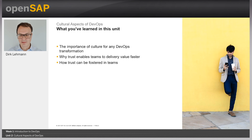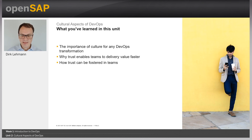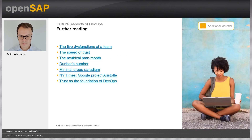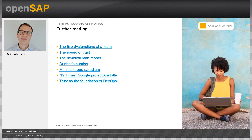So what did we learn in this unit? Culture is very important in any DevOps transformation because it fully leverages the potential of all the technical measures you do. We learned how trust can be fostered in teams: think about team size, think about diversity, and think about psychological safety and failure culture. Again, here are some links for further reading for your reference. Thanks for tuning in and see you in the next session where we discuss organizational design patterns.